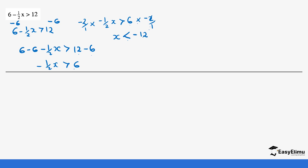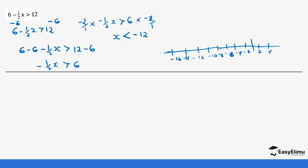So the value of x is less than negative 12. If we look at a number line using intervals of 2 — negative 2, negative 4, negative 6, negative 8, negative 10, negative 12, negative 14, negative 16, negative 18, and so on — we go to where negative 12 is. The values of x are less than negative 12, so our arrow moves in that direction. Because negative 12 is not part of the solution, we circle negative 12 but do not fully shade it.